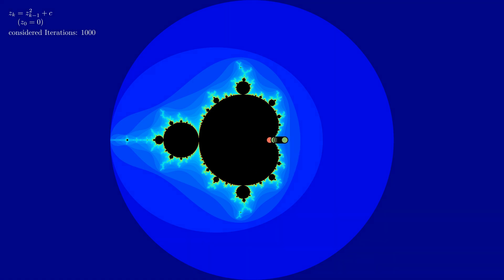We can also have a look on the inside of the main cardioid. Here we see that the path always seems to converge to a single point. We will explore why that is the case in a later video.